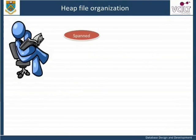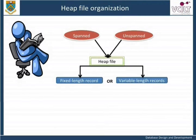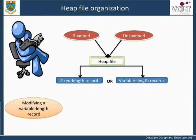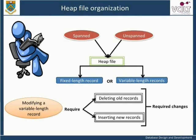Both spanned and unspanned organizations can be used for a heap file of either fixed length records or variable length records. Modifying a variable length record may require deleting the old record and inserting a new record incorporating the required changes, because the modified record may not fit in its old position on disk.